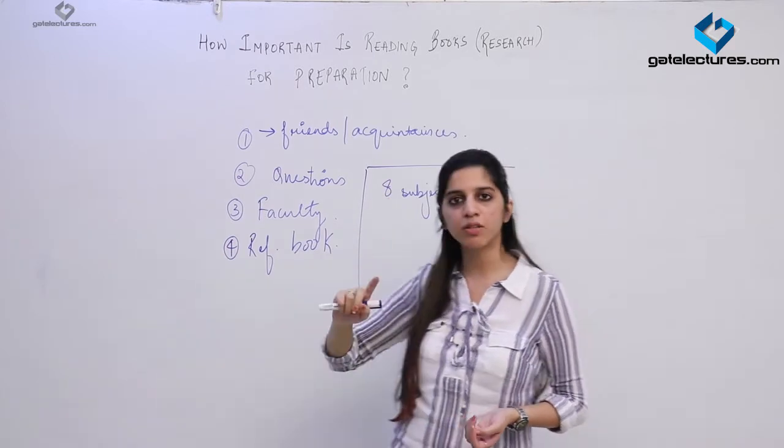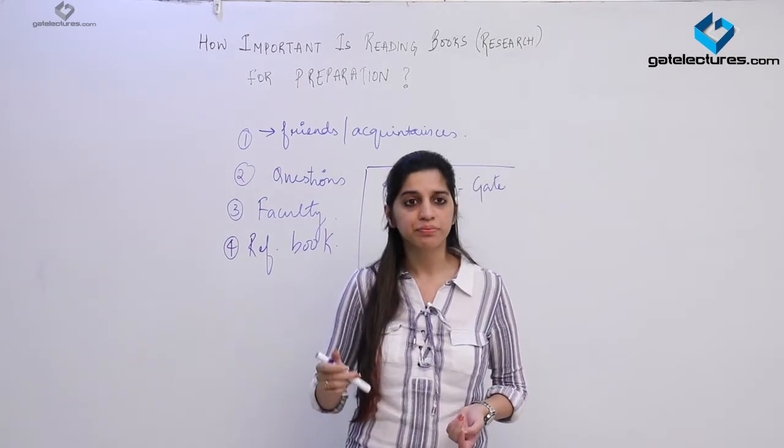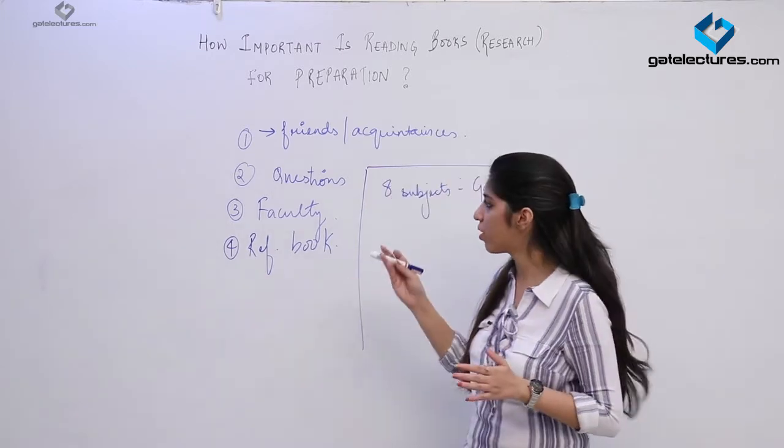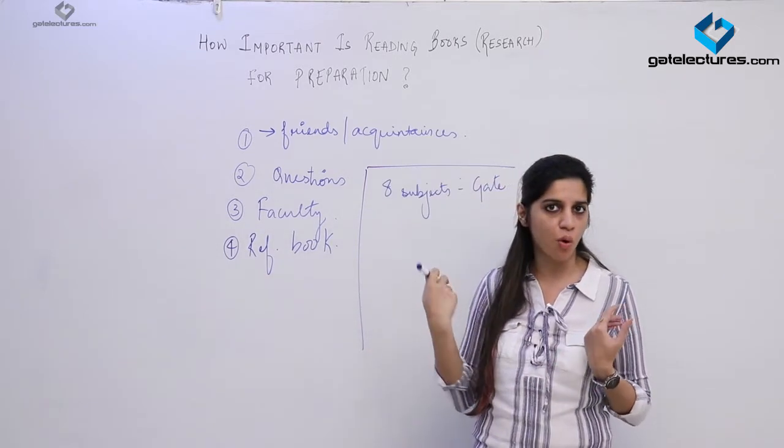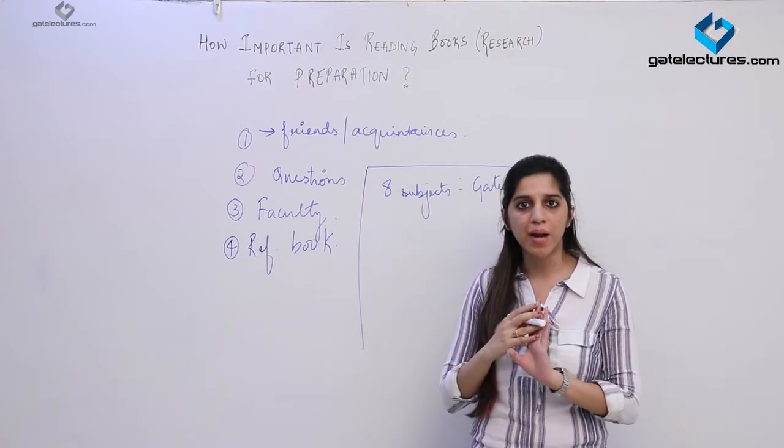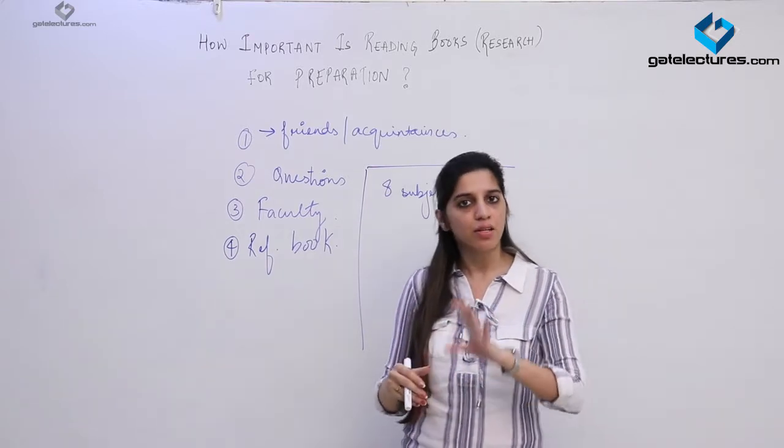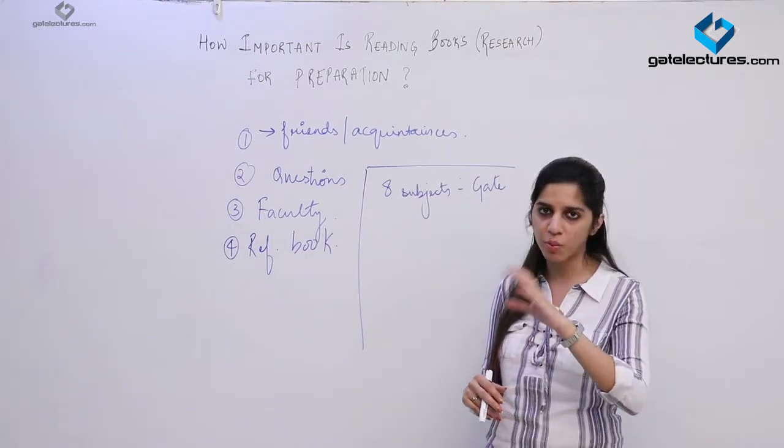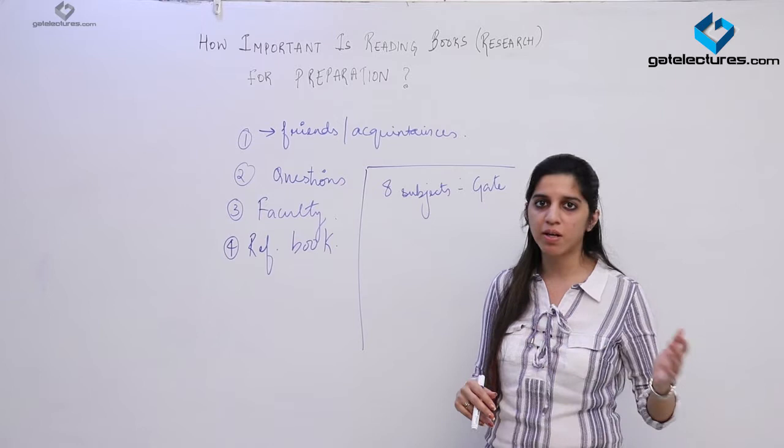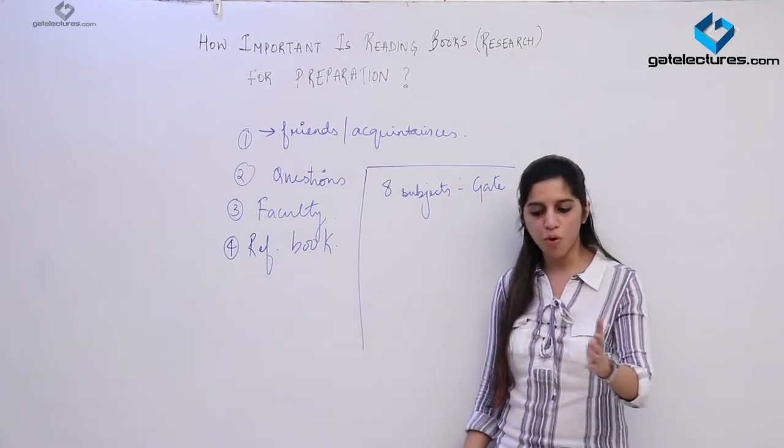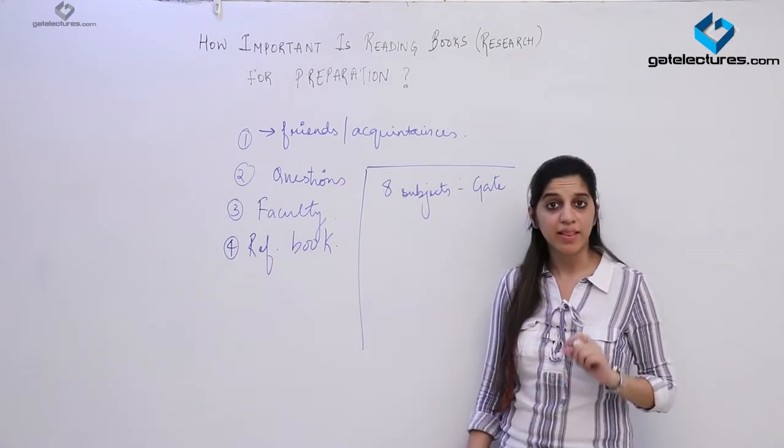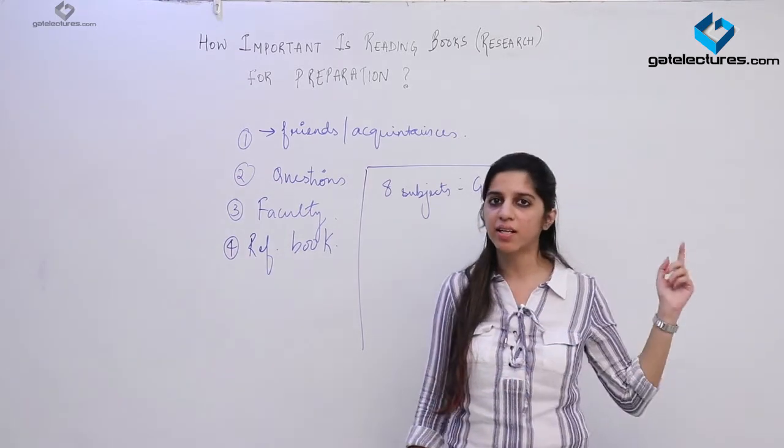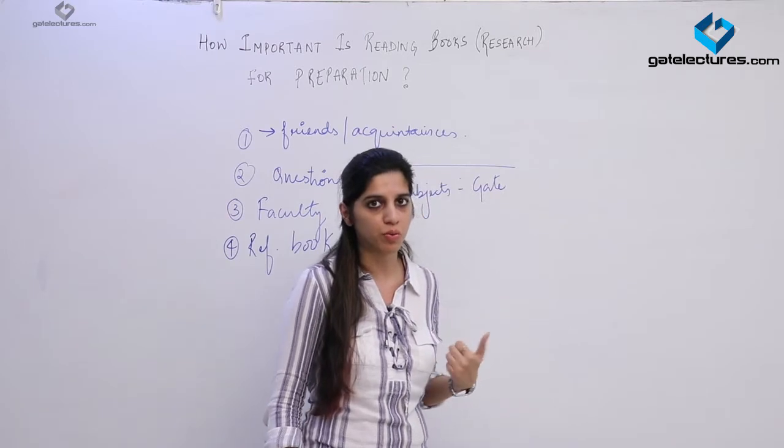Suppose you have allotted 1 month for analog electronics. If you have allotted 1 month for analog electronics, you have completed your lectures, you have watched all the videos, you have done practicing all the questions, you certainly go for reading books. You have left some parts, some parts were not covered in the videos, some parts have not been covered by the faculty - what do you do? You open the books and read them yourself, that is a very good strategy. But if you have allotted 1 week for a subject and you start reading book for that subject, that is not going to work.